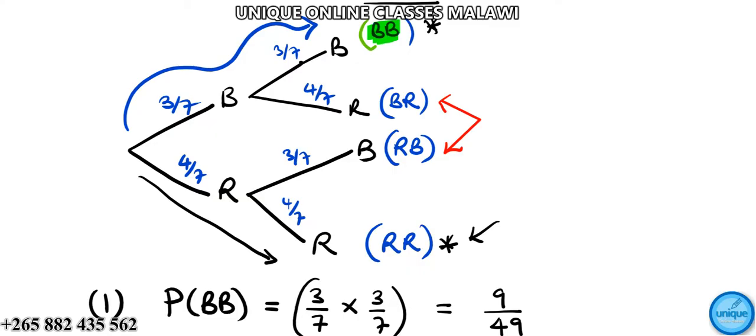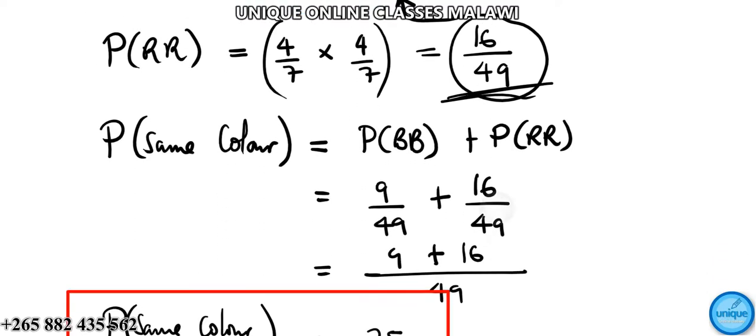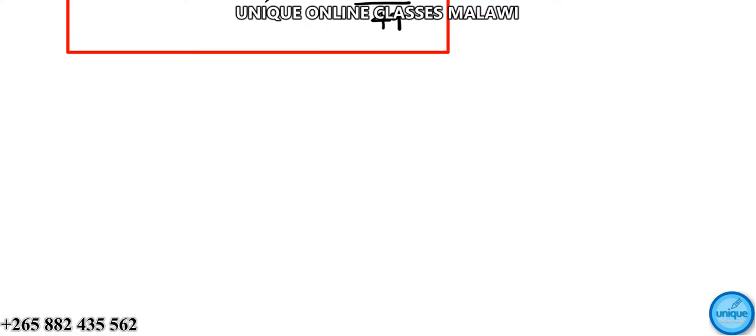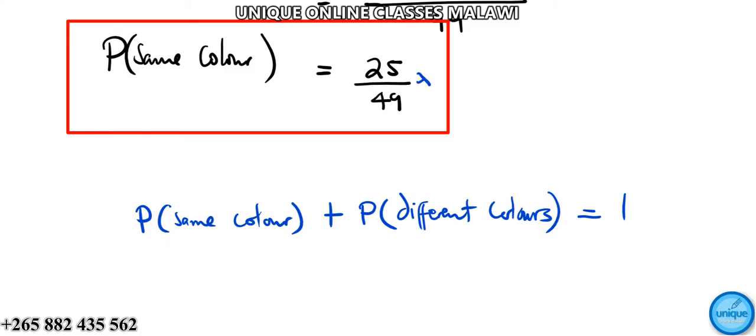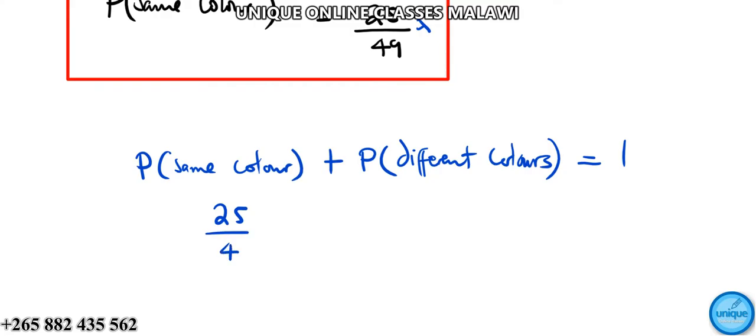Let's now see question number 3: both pens are of different colors. These are different colors, so we can use the sum of all probabilities. The same color plus the different colors equals 1.